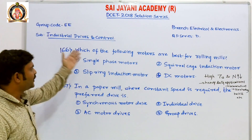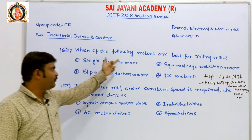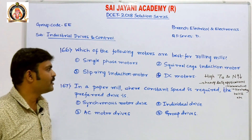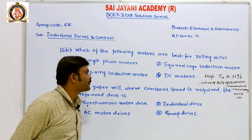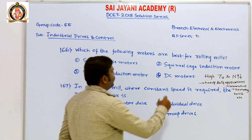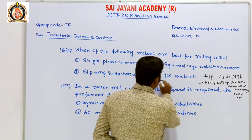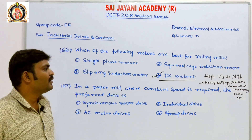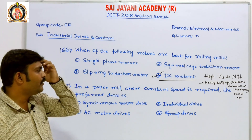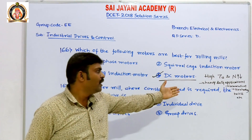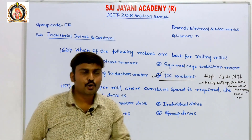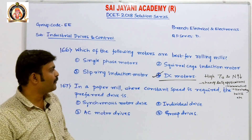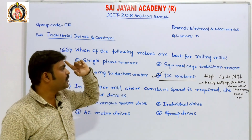Let us move on to question number 166 on industrial drives and control. It asks: which of the following motors are best for rolling mills? Options are: single-phase motors, squirrel cage induction motor, slip-ring induction motor, and DC motors. The answer is option 4, DC motors. DC series motors have high starting torque and variable speed. Since they have these characteristics, they can be used in heavy-duty applications like locomotives, steel rolling, rolling mills, hoists, and lifts. The motors best for rolling mills are DC motors.